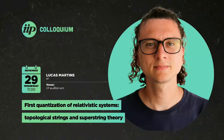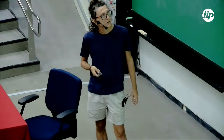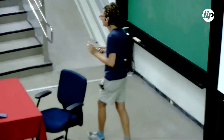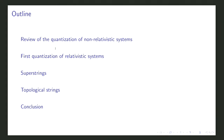Today I'm going to talk about a topic which I think is misunderstood because of its poor communication. I'm going to talk about the first quantization of relativistic systems and two particular objects that will catch our attention: the superstring and the topological string. I'll comment on some applications of these two objects in our current understanding of theoretical physics.